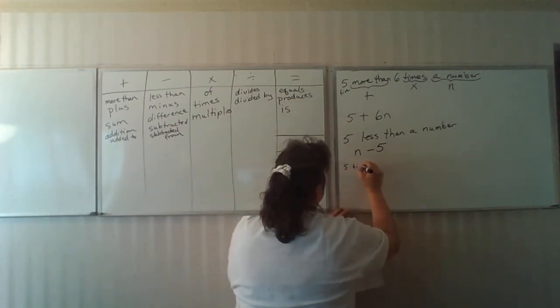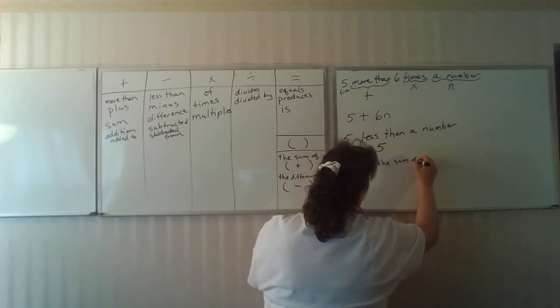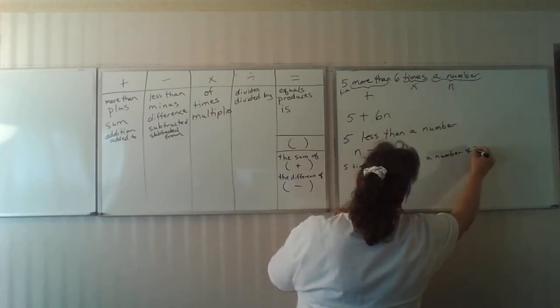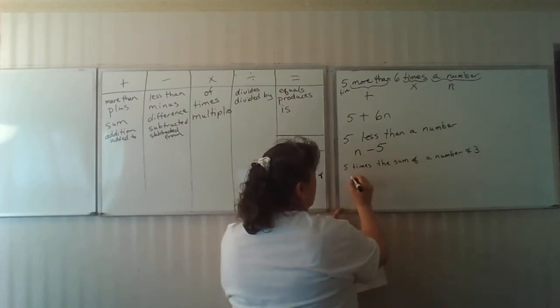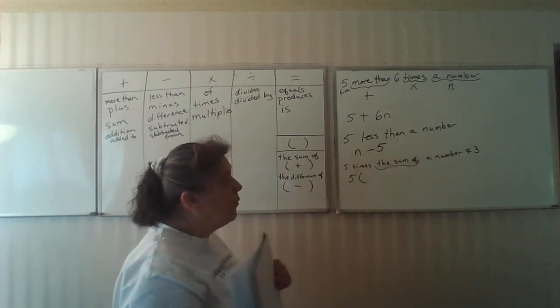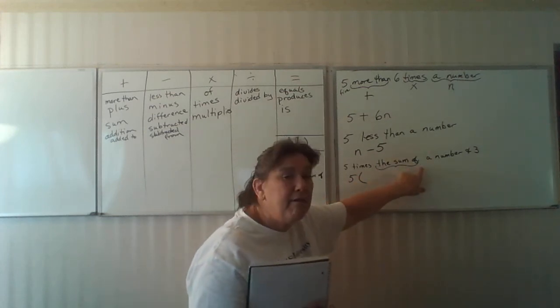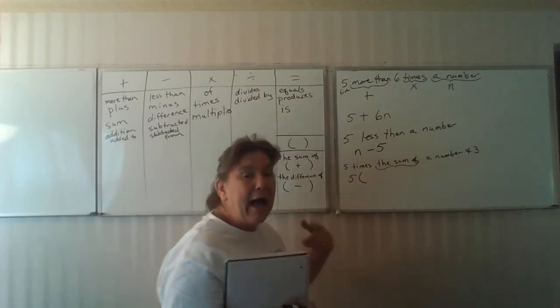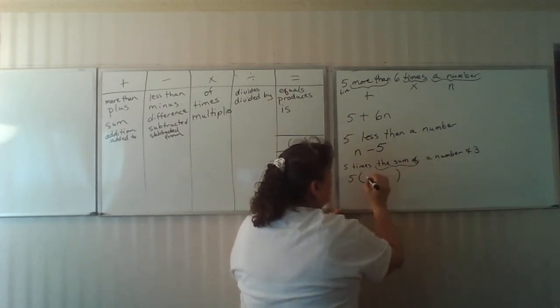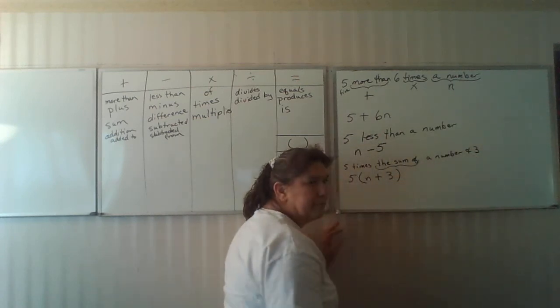Five times the sum of a number and three. Five times, I'm going to use the parentheses form of multiplication because the sum of indicates the things that follow it have to go inside that parentheses. A number, there's my n and three. Notice the order here follows the order here.